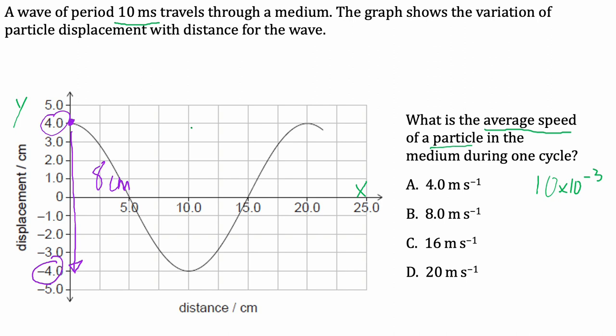During one cycle, though, it's going to travel back up, which is adding another 8 centimetres to the total distance travelled. So the total distance that particle is going to move up and down is 16 centimetres.